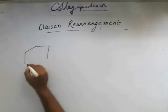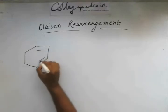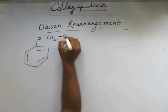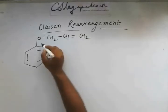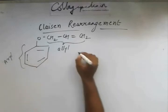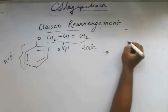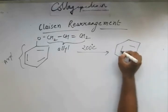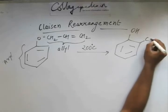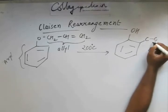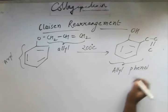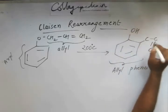We will write down the basic reaction before getting into the mechanism. We have an aryl ether where oxygen is connected to a CH2–CH=CH2 allyl group. When this is subjected to 200 degrees Celsius, we get a phenol with the allyl group now attached to it — this is the allyl-phenol product. The allyl part is attached at the ortho position of the ring, next to the OH group.